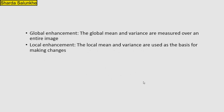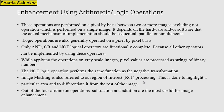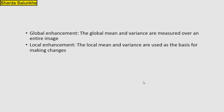For histogram statistics used in image enhancement, r denotes the discrete random variable and P(r) denotes the normalized histogram. The mean is m = summation from i = 0 to L minus 1 of ri times P(ri), and the nth moment can be calculated similarly. Global enhancement means the global mean and variance are matched over the entire image, while local enhancement uses local mean and variance as the basis for making changes. In the next part, we will cover arithmetic and logical operations used for image enhancement.